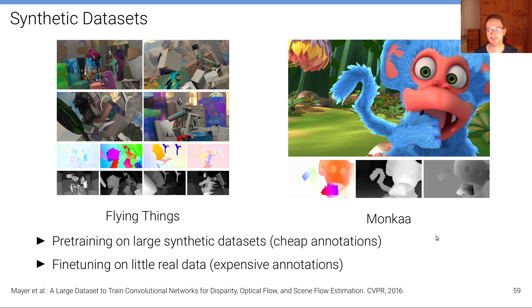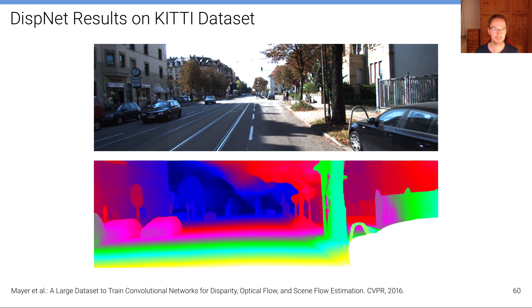And another dataset that was used was the Monkaa dataset, which is a CGI movie with free assets. And here's a result of this map applied on the KITTI dataset. You can see the resulting disparity maps are smooth and they are of high quality.